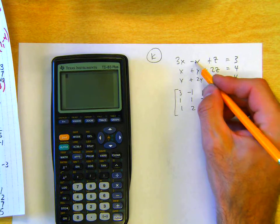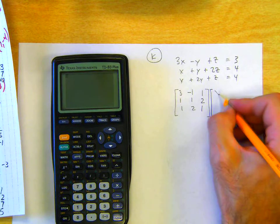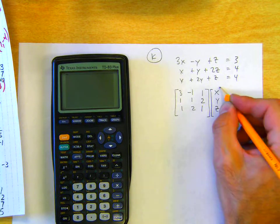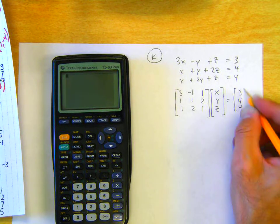Remember, if there's no numbers in front of the variables, it's a 1. Our variable matrix is going to be x, y, z, and our constant matrix is going to be 3, 4, and 4.